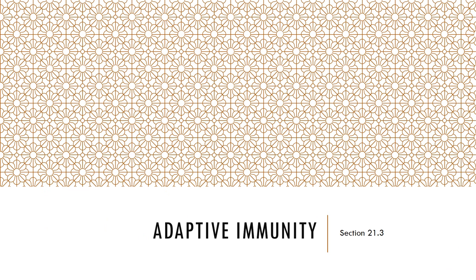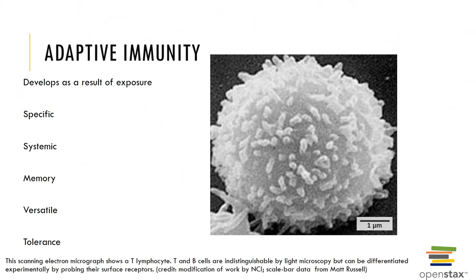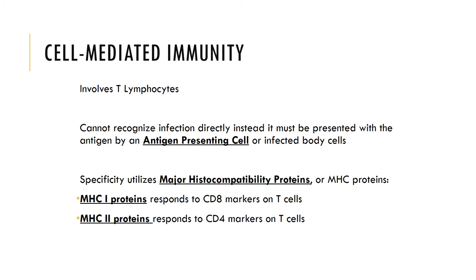Now let's move on and look at adaptive immunity. The adaptive immune response is specific, systemic, has memory, is versatile, and exhibits tolerance. There are two main types of adaptive defenses: cell-mediated immunity and antibody-mediated immunity. Cell-mediated immunity is provided by the action of T lymphocytes, which are produced in the red bone marrow but mature in the thymus gland. T lymphocytes cannot recognize an antigen directly; instead, the antigen must be processed and presented to the T lymphocyte by either specialized antigen presenting cells, APCs, or infected body cells.